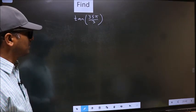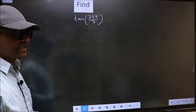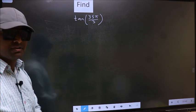Find tan 35π by 3. To find this, we should follow this method.